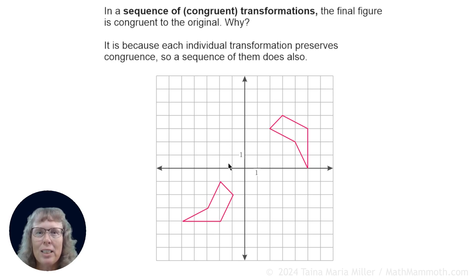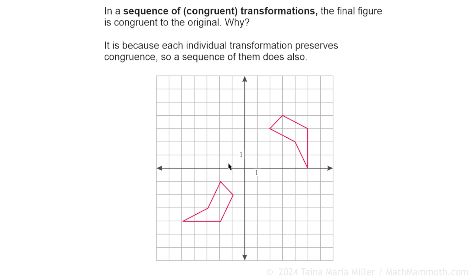We've already looked at translations, reflections, and rotations, and we know that those are congruent transformations. They preserve the congruence of a figure, and if we combine them, we make a sequence of them, then also the figure will be congruent to the original. And that is because each individual transformation preserves congruence, so a sequence of them does also. Makes sense, right?